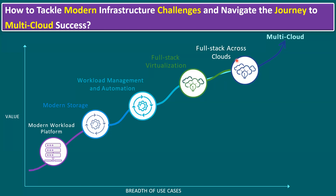Full-stack across clouds also enables SRE — site reliability services — and additional features like storage encryption. The final stage is multi-cloud: customers are not only running on private cloud or hybrid cloud, but also on additional clouds. When they have additional clouds alongside hybrid cloud, we consider that multi-cloud. These are all the key use cases and how we can tackle infrastructure challenges and navigate the journey to multi-cloud success.